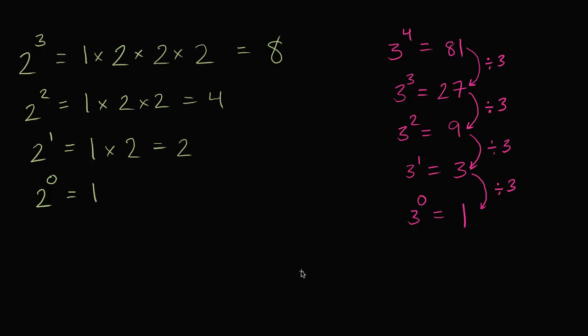So I know it might seem a little bit counterintuitive that something to the 0th power is going to be equal to 1. But this is how the mathematics community has defined it because it actually makes a lot of sense. Either if you view an exponent as taking a 1 and multiplying it by the base the exponent number of times, so I'm going to multiply 1 by 2 three times, or if you just follow this pattern that every time you decrease the exponent by 1 you're going to be dividing by the base.